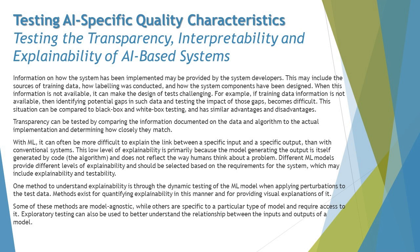ML models should be selected based on the requirements for the system, which may include explainability and testability. Explainability is about how detailed the information is between every single aspect of an AI-based system. If the link between a specific input and a specific output is not precisely explained, there is no clarity on what the system does, which brings challenges in building the right set of tests.